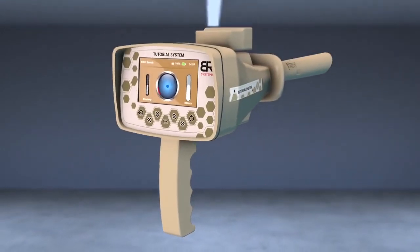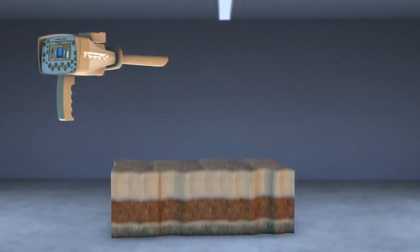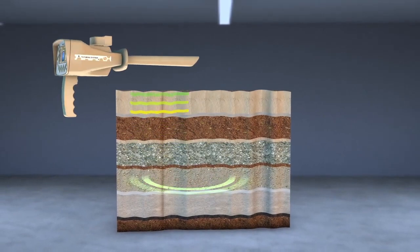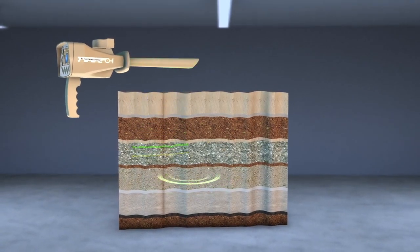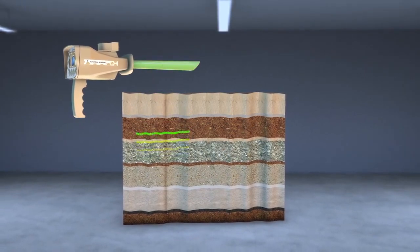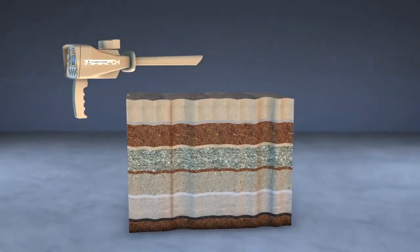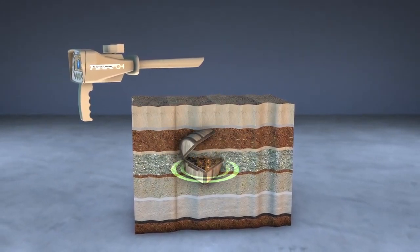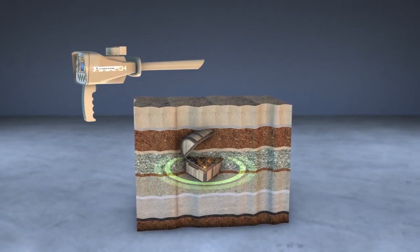This system detects gold buried for long periods underground. Based on capturing the ion radiations emitted by the metal as a result of its interaction with the soil for long periods. And through this system, the ancient buried gold treasures can be detected easier and faster.